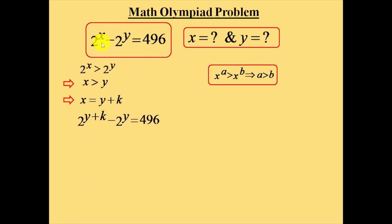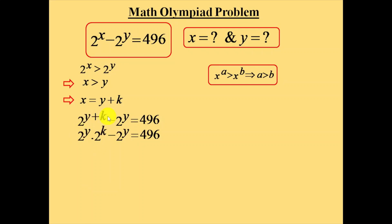So the equation 2 power x minus 2 power y equals 496 will become: 2 power (y plus k) minus 2 power y is equal to 496. Now expand 2 power (y plus k) as 2 power y into 2 power k, using the rule a power (m plus n) equals a power m into a power n. Now take 2 power y as common. The equation becomes 2 power y into (2 power k minus 1) is equal to 496.